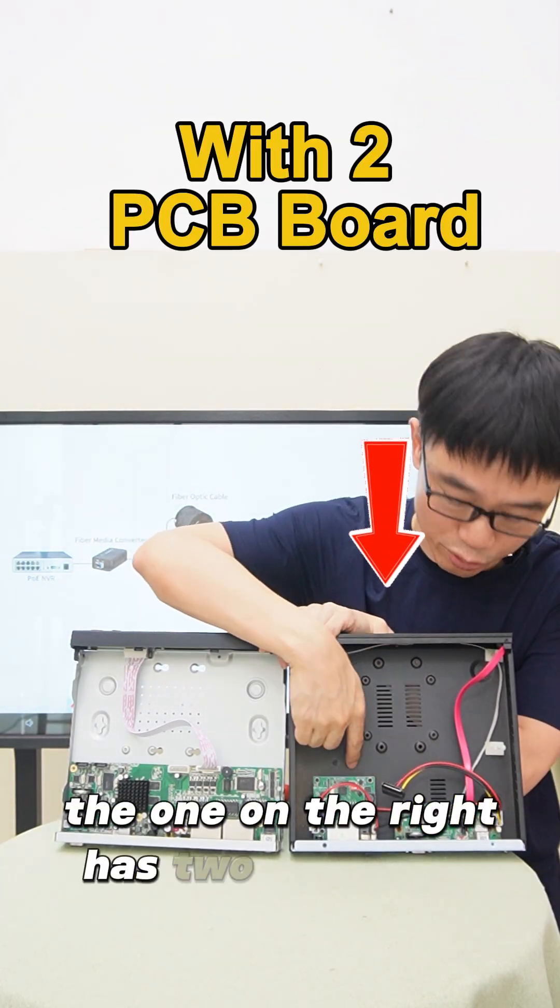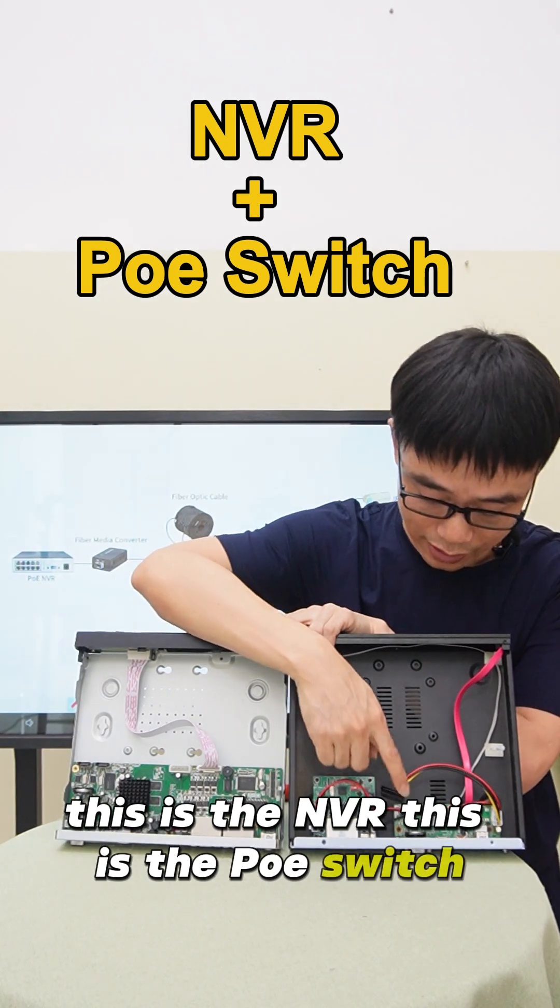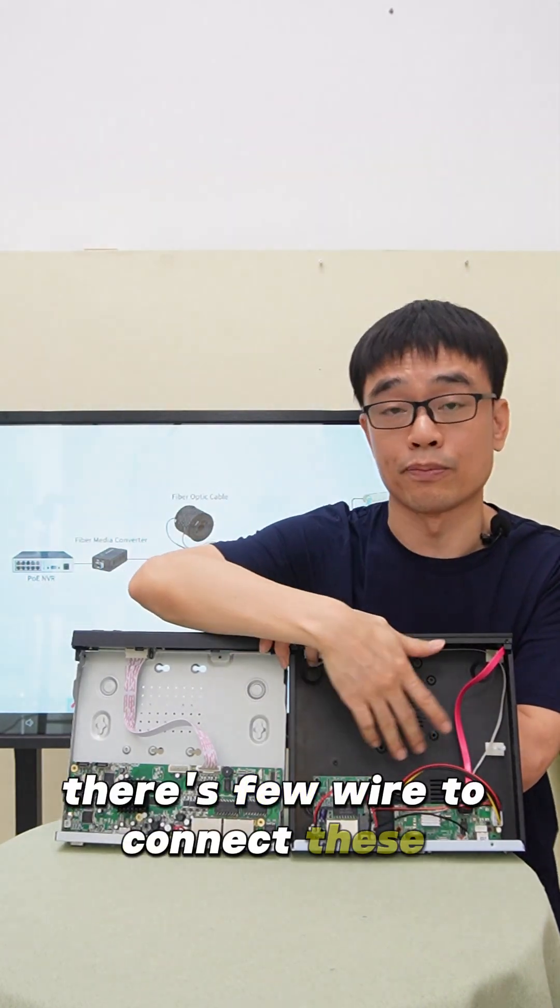The one on the right has two PCB boards. This is the NVR, this is the PoE switch. There's a few wires to connect these boards together.